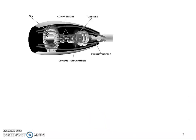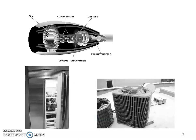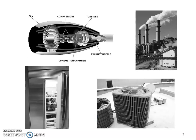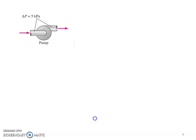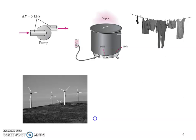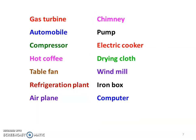This is a chemical plant, a gas turbine unit, a jet engine, a refrigerator, an air conditioner with its outer unit, a factory, a pump, an electric cooker, drying of cloth, a windmill, an iron box, and a computer. These are all the devices where thermodynamics is applicable.